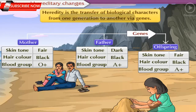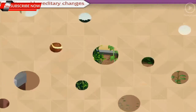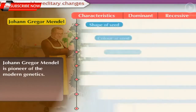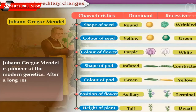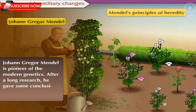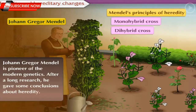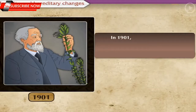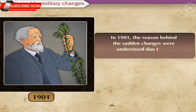Heredity is the transfer of biological characters from one generation to another via genes. Johan Gregor Mendel is pioneer of modern genetics. After long research, he gave some conclusions about heredity. In 1901, the reason behind sudden changes were understood due to the mutational theory of Hugo de Vries.